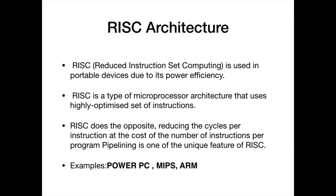Reduced instruction set computer is the second type of instruction set architecture. It is a power-efficient architecture with high portability, used in iPods and gaming consoles. It uses a simple set of instructions that are executed within a cycle and hence is a highly optimized set of instructions. RISC reduces the instruction cycle at the cost of number of instructions per program, which is opposite to CISC where instructions per program are reduced at the cost of cycles per instruction. Examples include PowerPC, MIPS, and ARM.